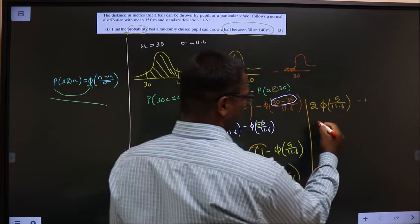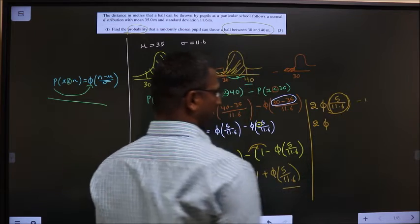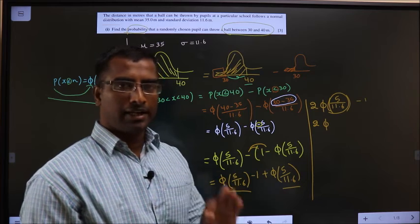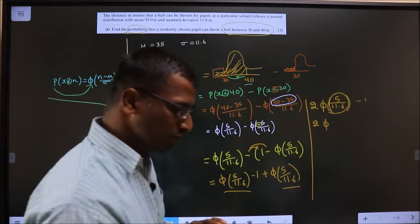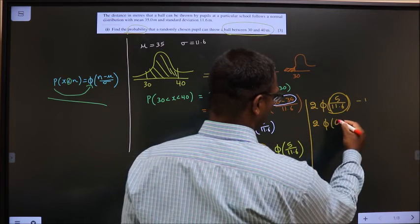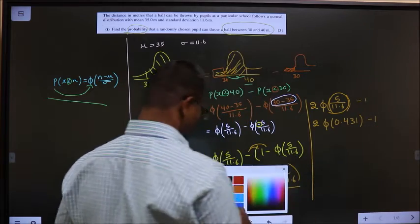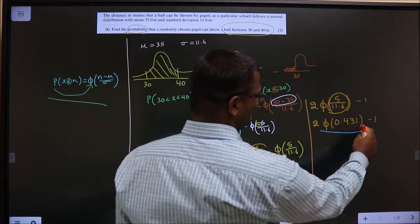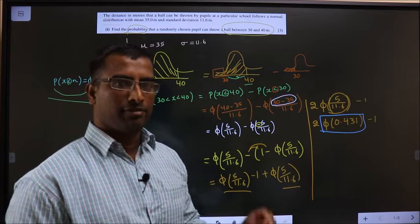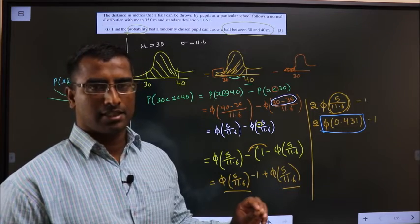Next. 2 times of phi of, calculate 5 by 11.6. And take up to 3 decimal places. You should get it to be 0.431 minus 1. Now, this value you have to get from normal distribution table. If any doubts in using normal distribution table, look at the playlist in the description.